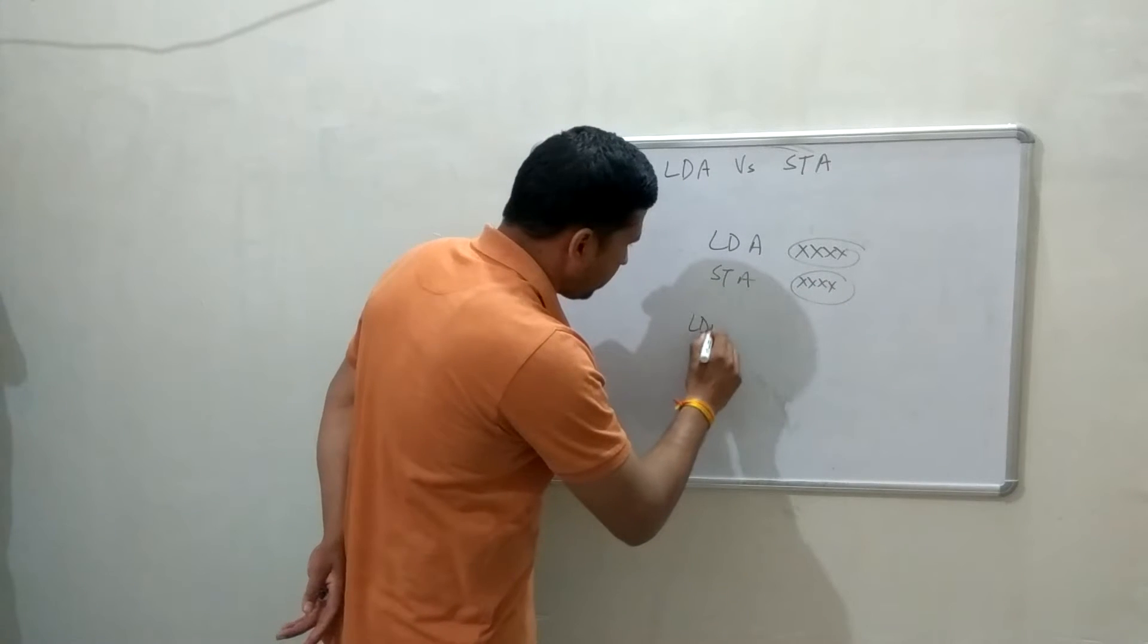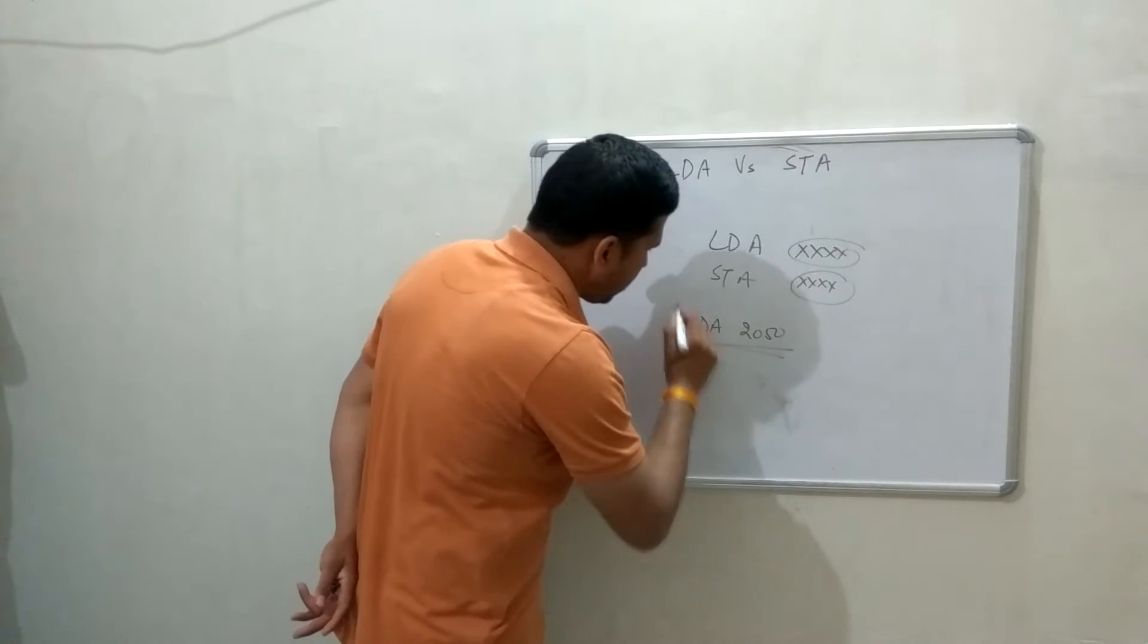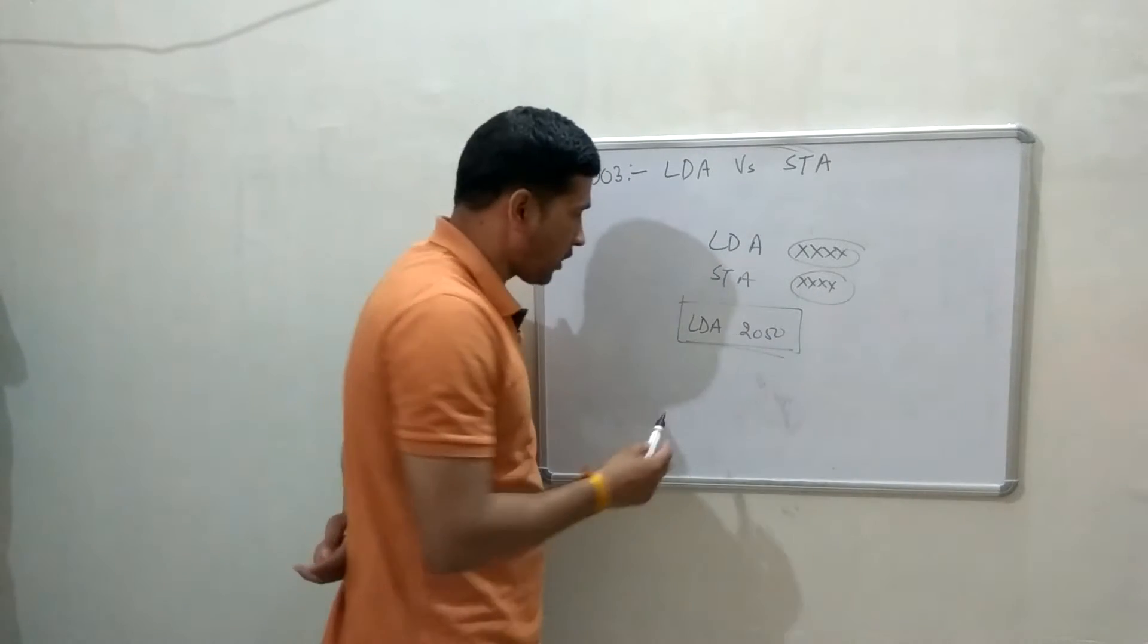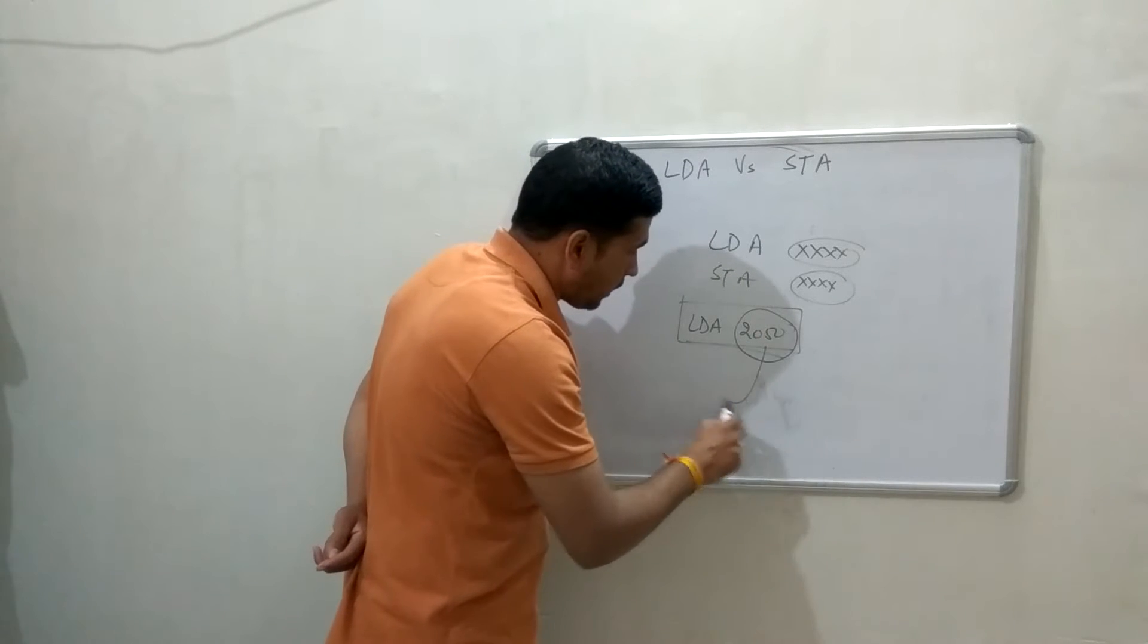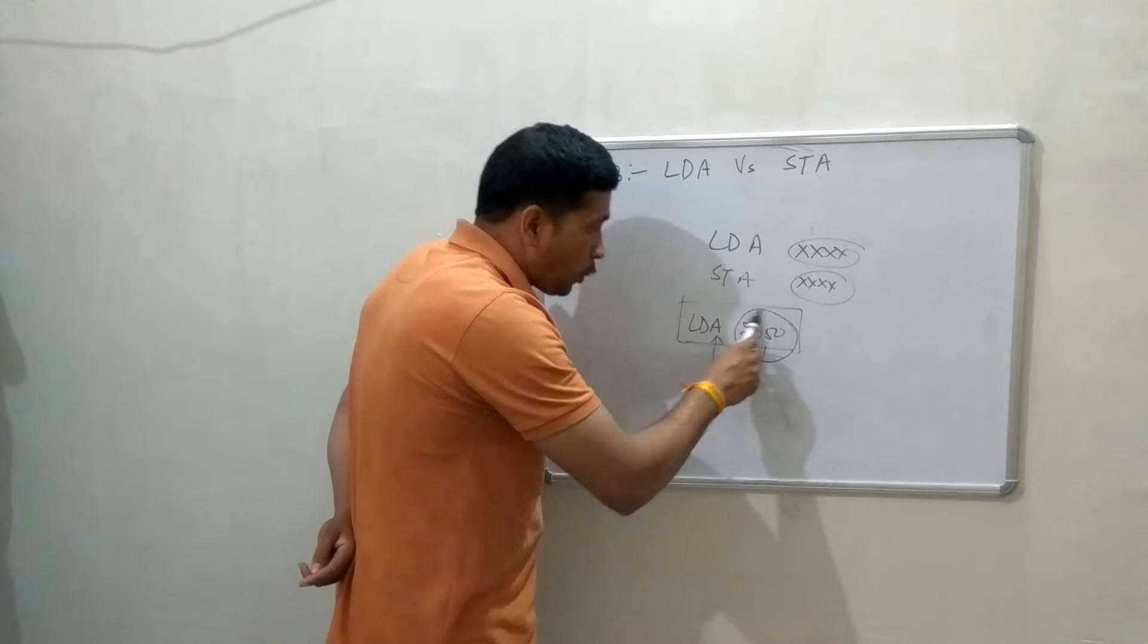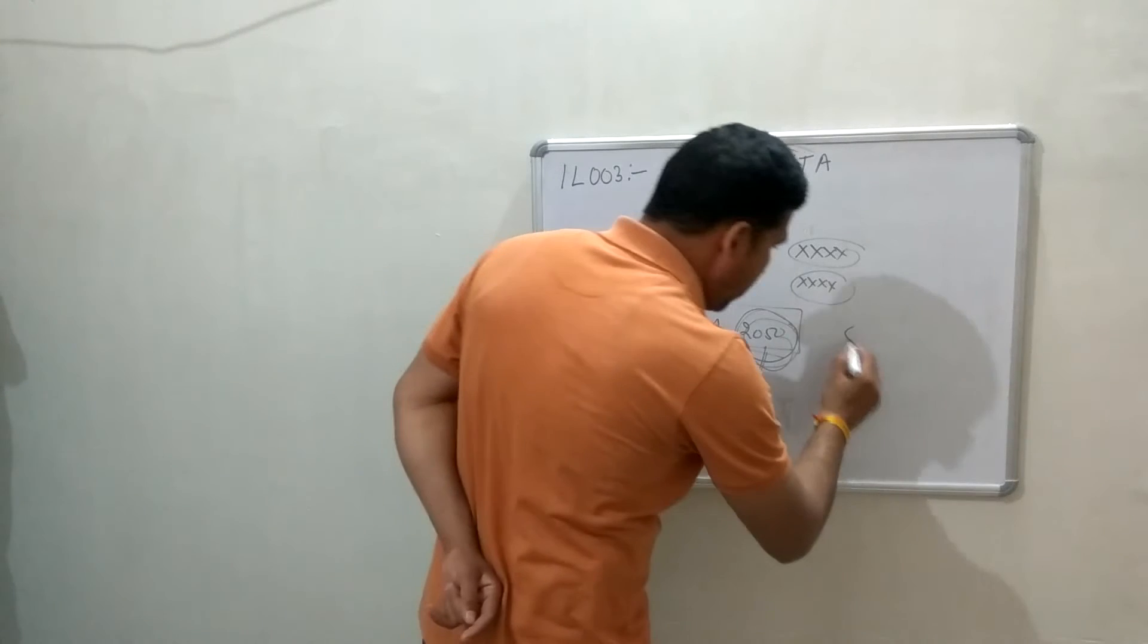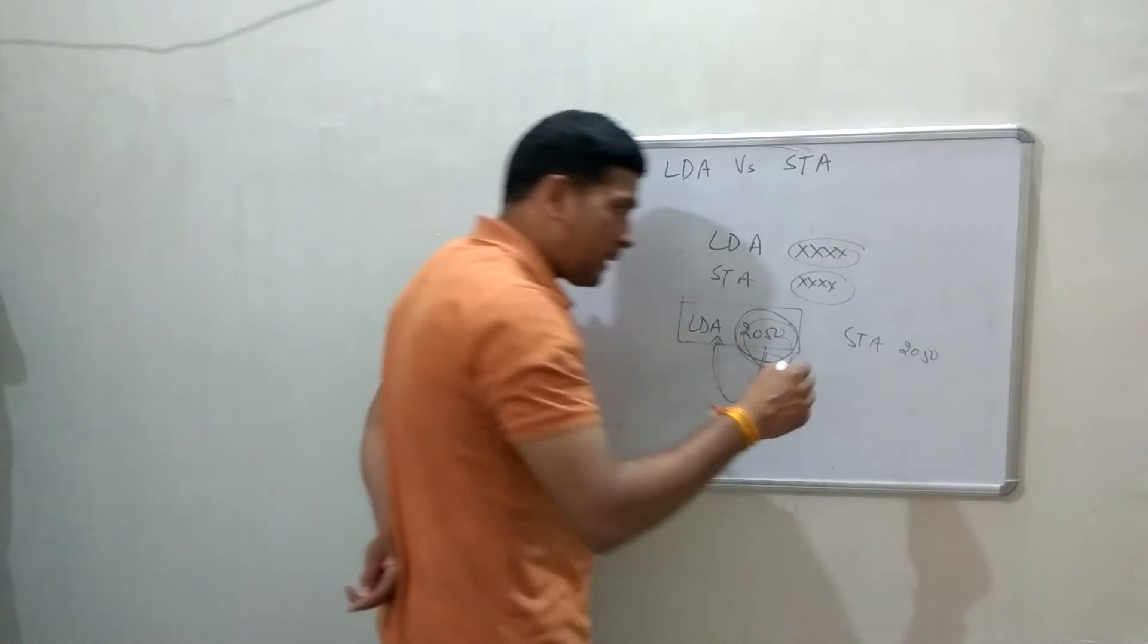The format of LDA is LDA 2050. What is the meaning of this instruction? Basically, in this instruction, it loads the content of this memory location into the accumulator. And what is the meaning of STA 2050?